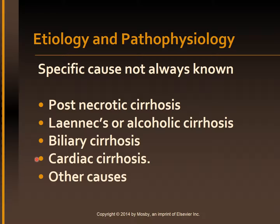Cardiac cirrhosis includes a spectrum of hepatic derangements that result from long-standing severe right-sided heart failure; the treatment is aimed at managing the patient's underlying heart failure. Other causes include environmental factors, malnutrition, extreme dieting, malabsorption syndrome, and obesity. Environmental factors and a genetic predisposition like Wilson's disease — copper accumulation — may also lead to the development of cirrhosis regardless of dietary or alcohol intake.